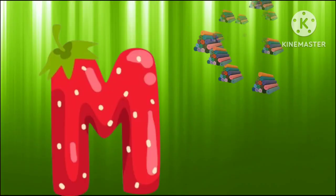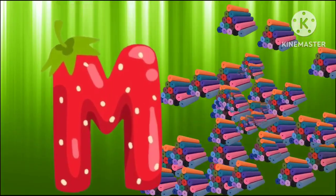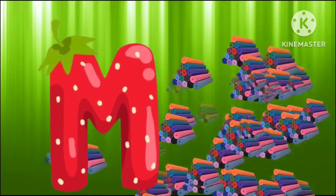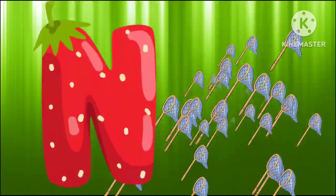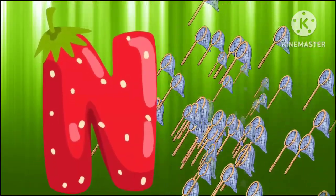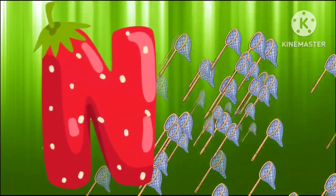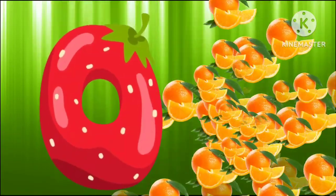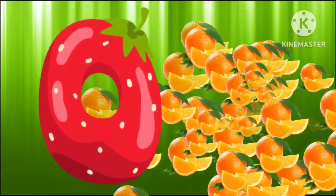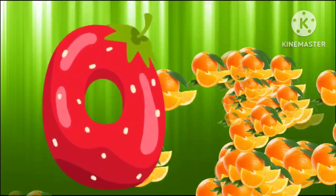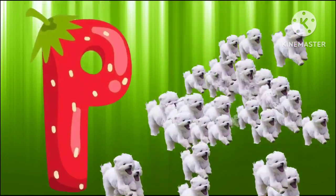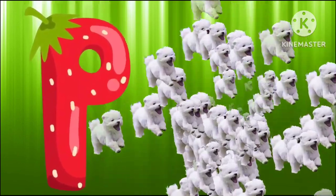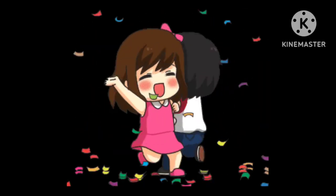M is for mat, m-m-mat. N is for net, n-n-net. O is for orange, o-o-orange. P is for pet, p-p-pet.